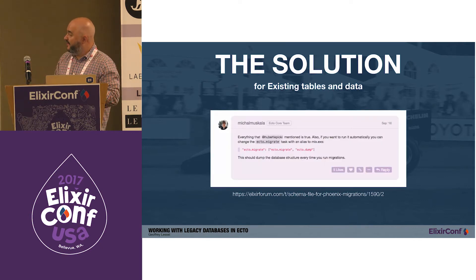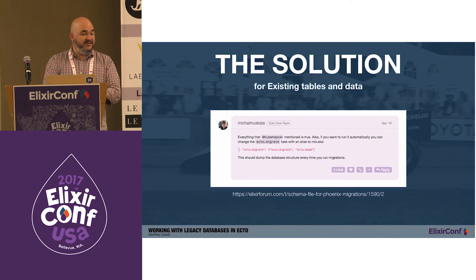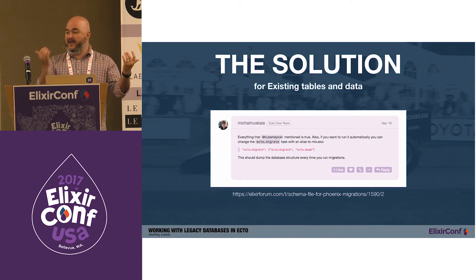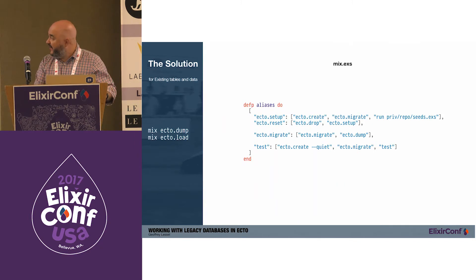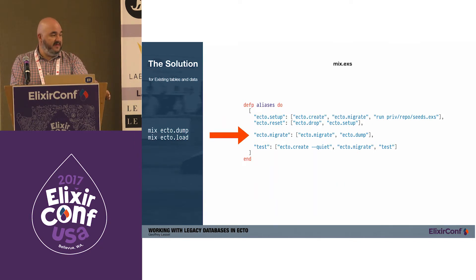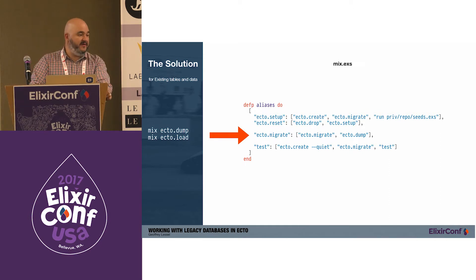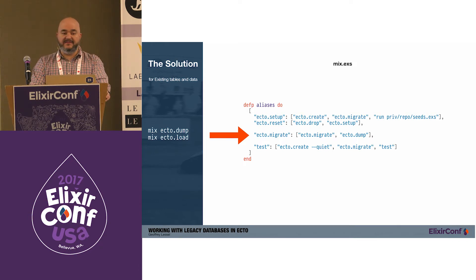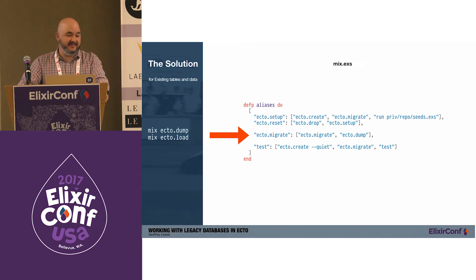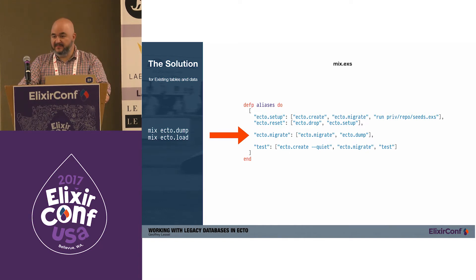I like the mix ecto.load and mix ecto.dump approach. One nice tip: if you want to commit the structure file to version control, you can alias mix ecto.migrate to run the migration and then immediately run the dump. Just put that mix ecto.migrate alias in your mix file, and from there you can commit that structure file to version control and pass it around your team to make sure it's always up to date. You can also configure it to dump data by passing a few different flags.